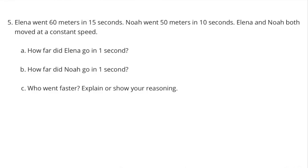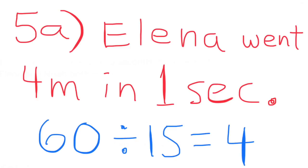Number 5. Elena went sixty meters in fifteen seconds. Noah went fifty meters in ten seconds. Elena and Noah both moved at a constant speed. A. How far did Elena go in one second? Sixty meters divided by fifteen seconds equals four. Elena went four meters in one second.